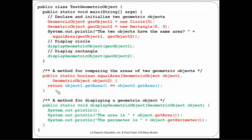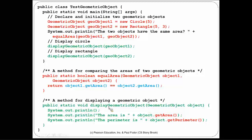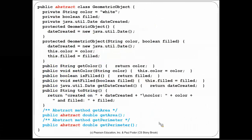After returning from equalArea, we display the two objects by calling a displayGeometricObject method, which invokes getArea and getPerimeter. This method doesn't need to know what type of object it is printing, because all GeometricObject instances must have getArea and getPerimeter — those two methods were declared abstract in the class GeometricObject and any abstract method must be implemented in the subclass.